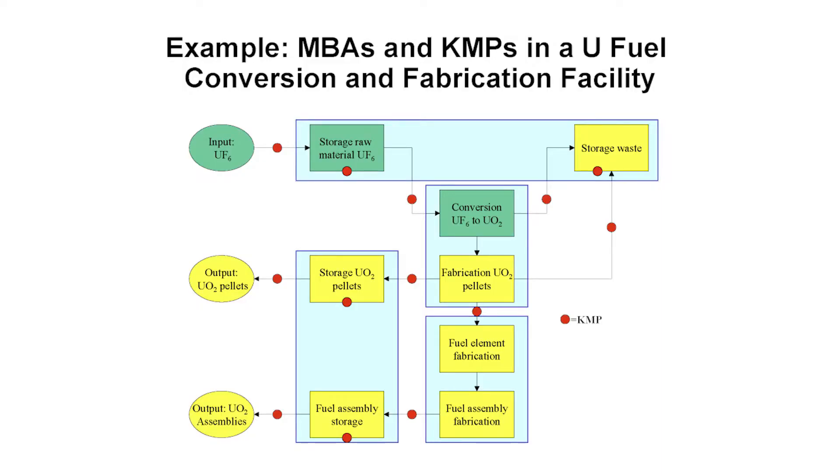A key measurement point, or KMP, is a location where nuclear material appears in such a form that it can be measured to determine material flow or inventory. KMPs include, but are not limited to, all of the inputs and outputs and storages in the MBAs.